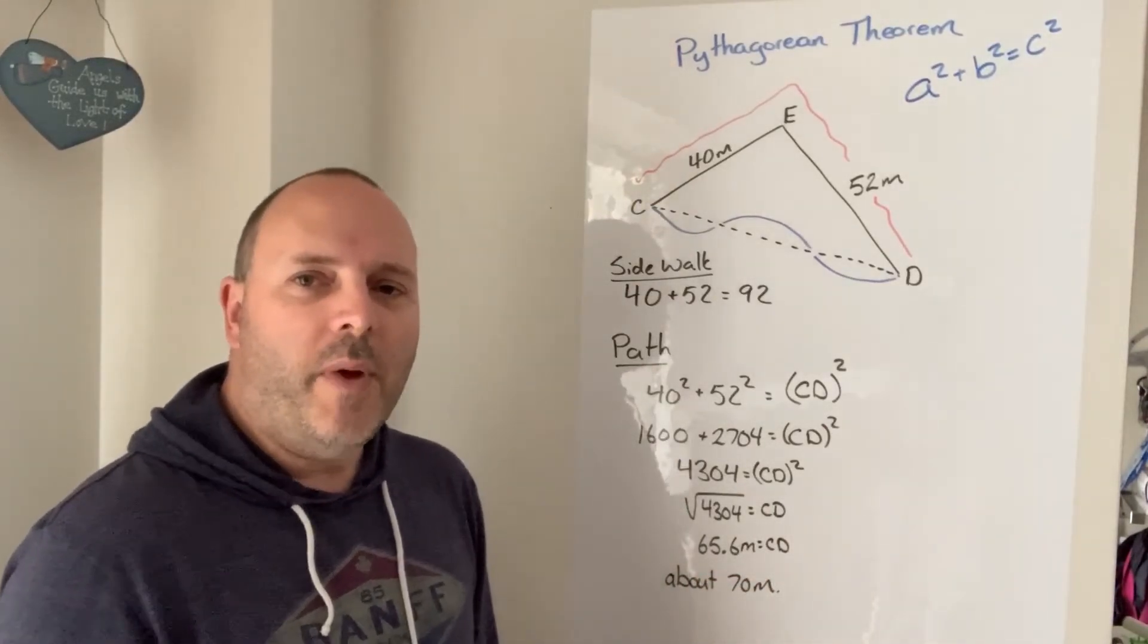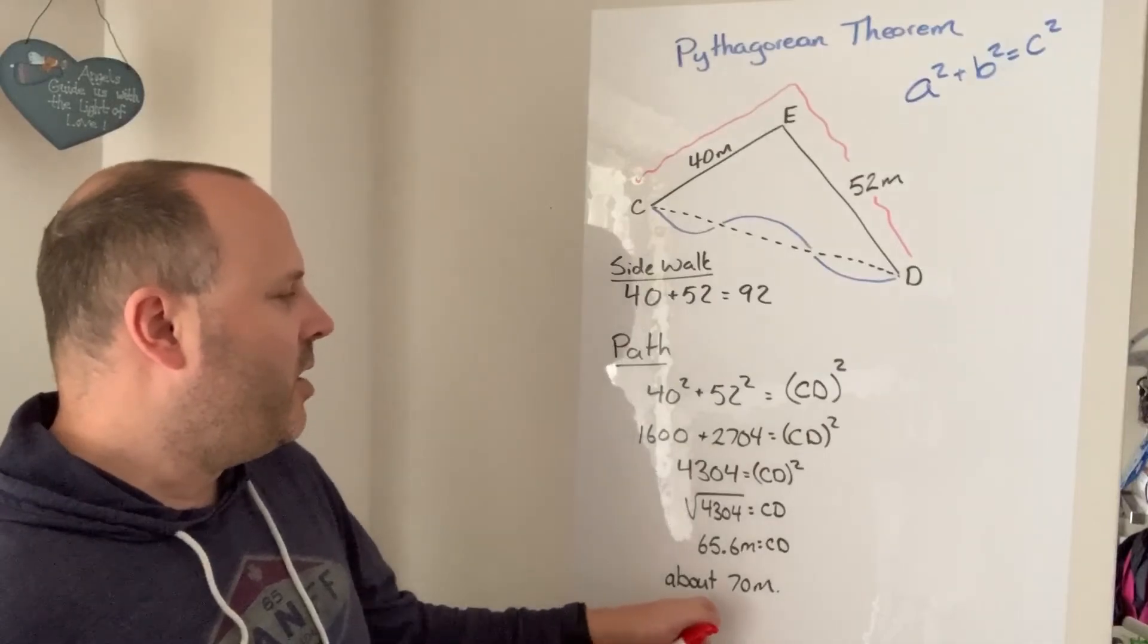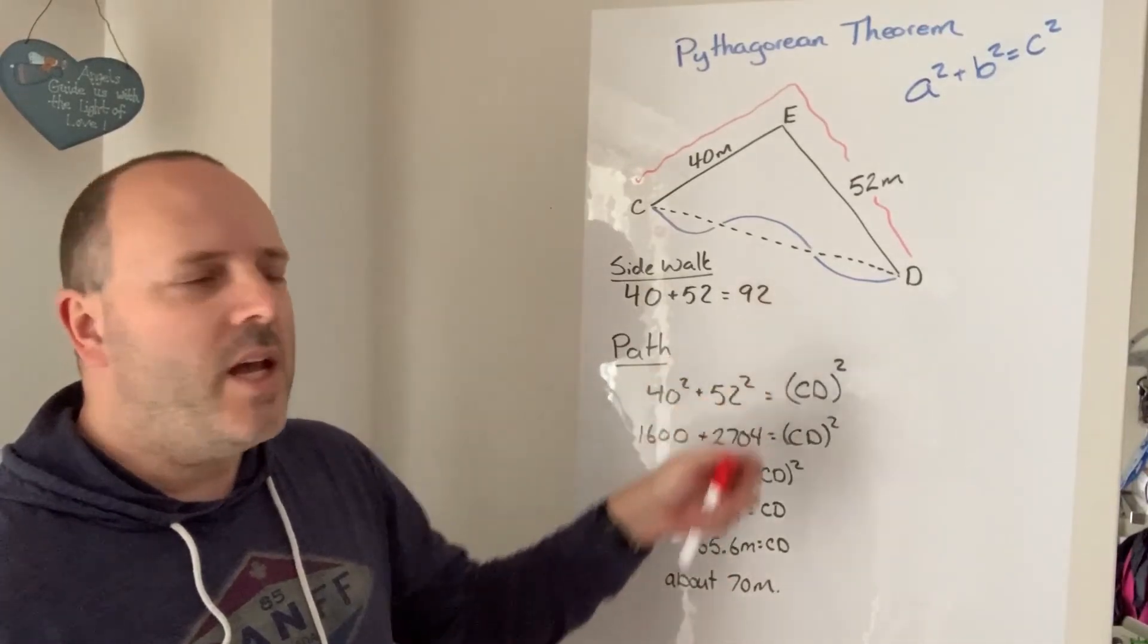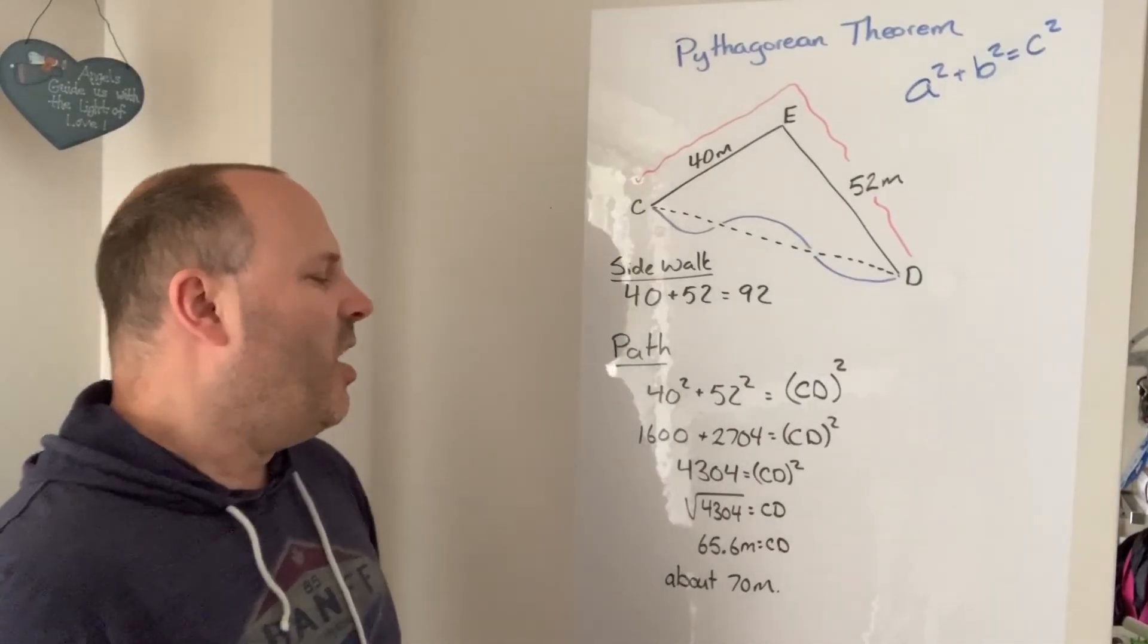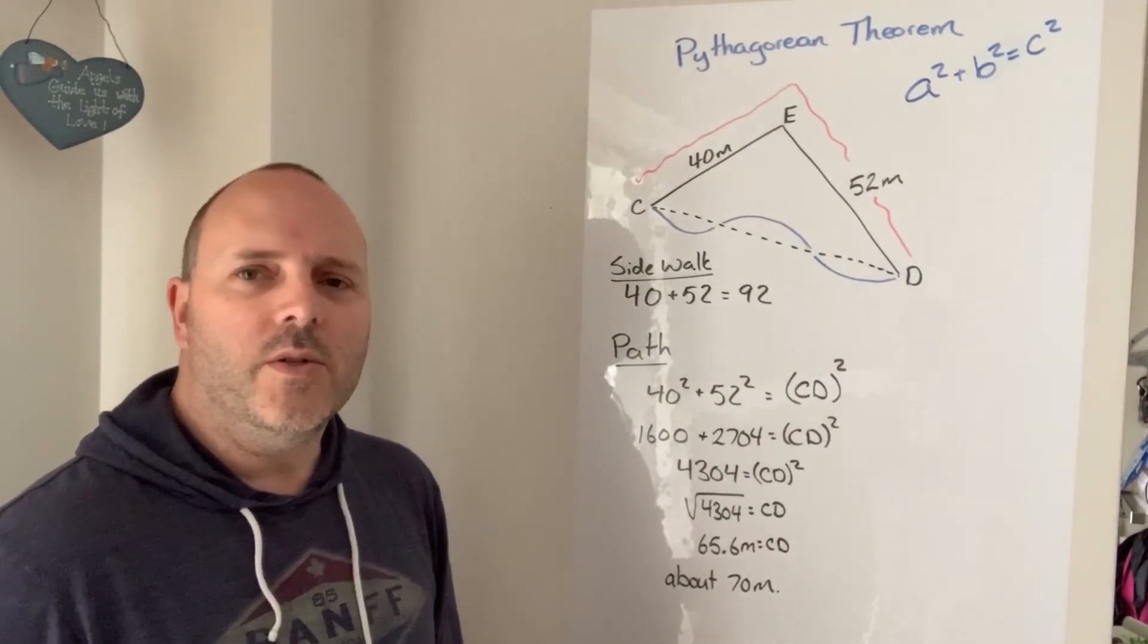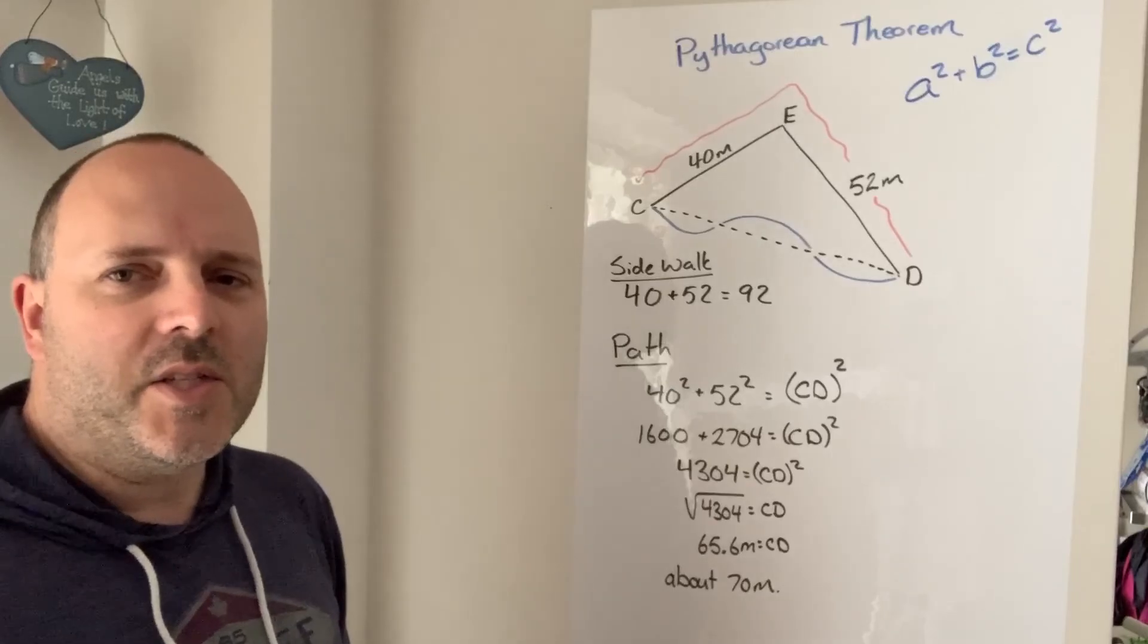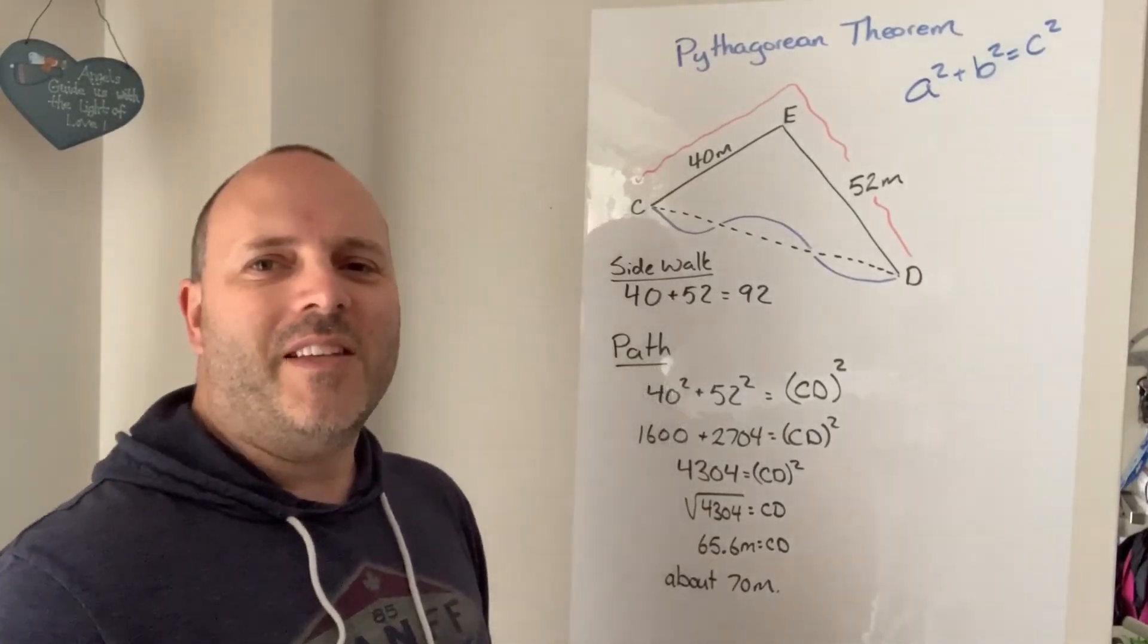So if I follow the path through the park I walk 70 meters, but if I follow the sidewalks I walk 92 meters. So I save myself about 22 meters by following the path instead of the sidewalk. Okay, thanks guys.